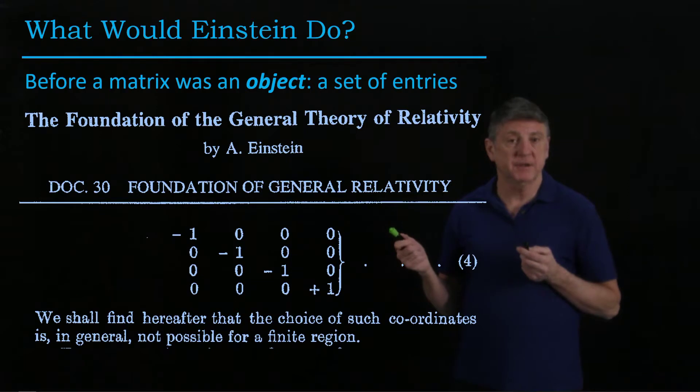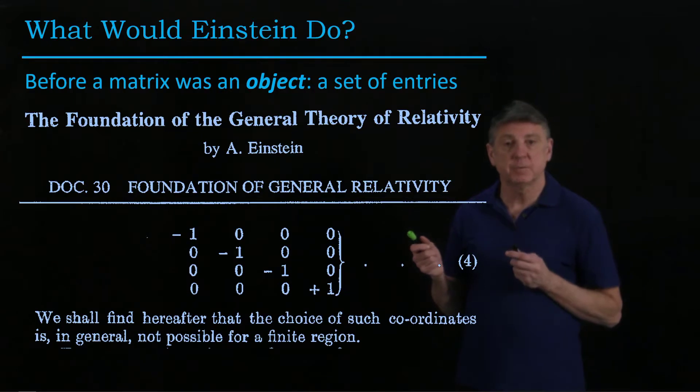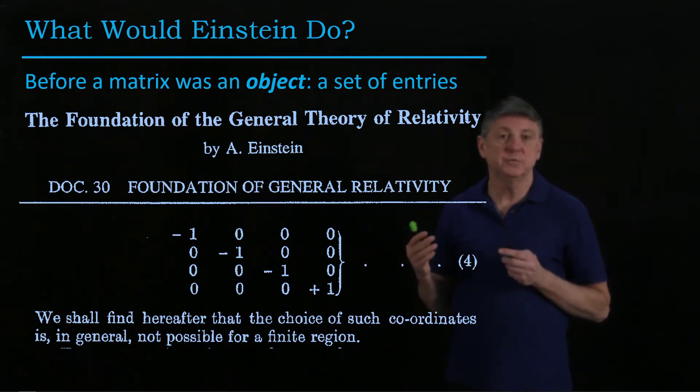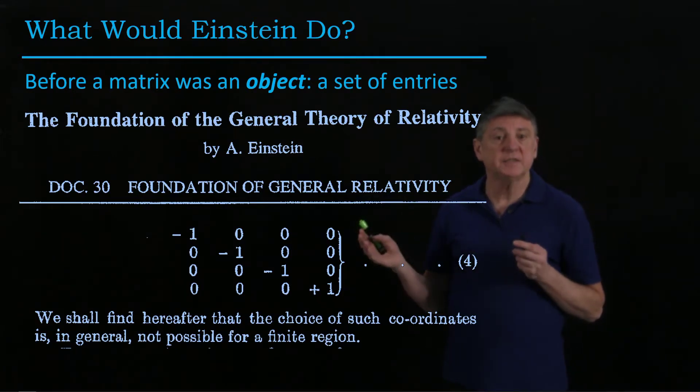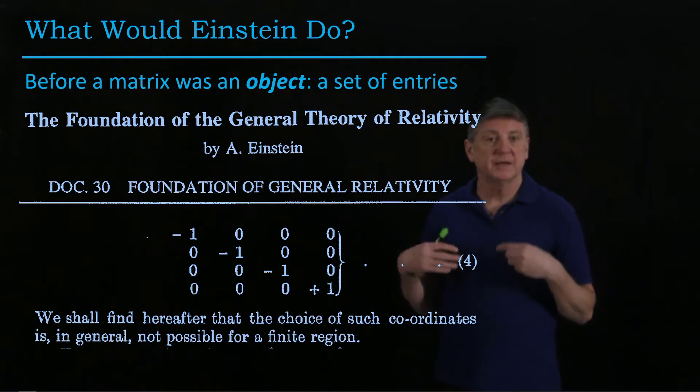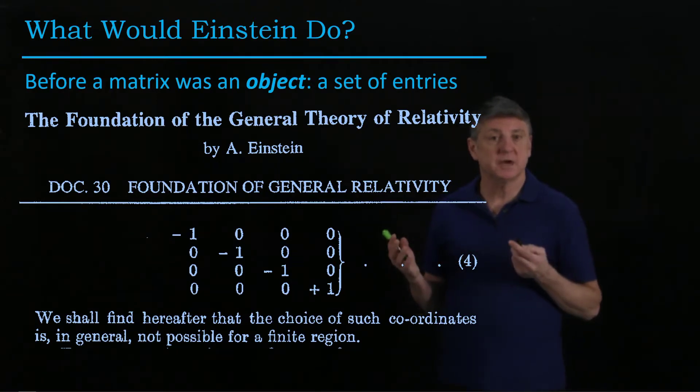And Einstein's summation convention for how to multiply a matrix and a vector is still used in parts of physics and differential geometry. We won't use it because we have a better notation, but when Einstein was writing his paper, the notation that we used for matrices and vectors had just barely been invented, and Einstein had to reinvent parts of linear algebra to explore and explain to us how space-time curvature works.